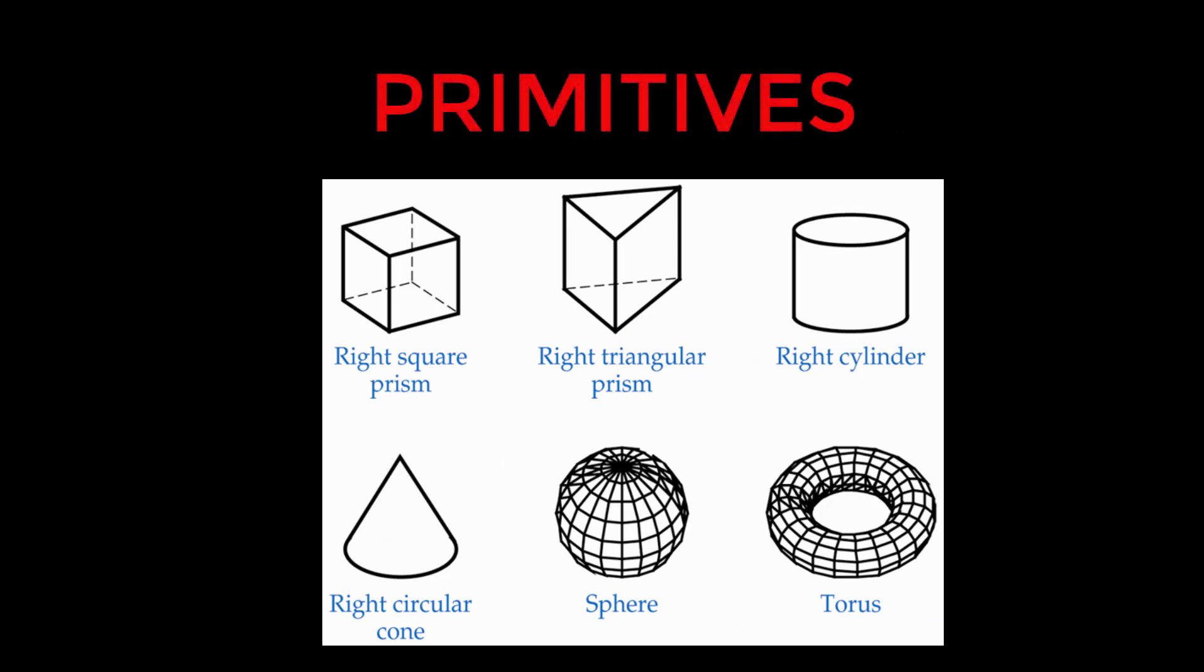The basic forms used to create complex models are known as primitives. This consists of the right square prism, right triangular prism, right cylinder, right circular cone, sphere, and torus.